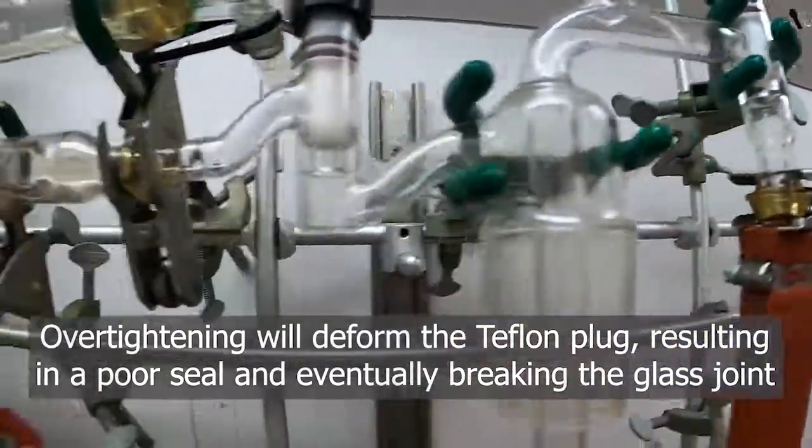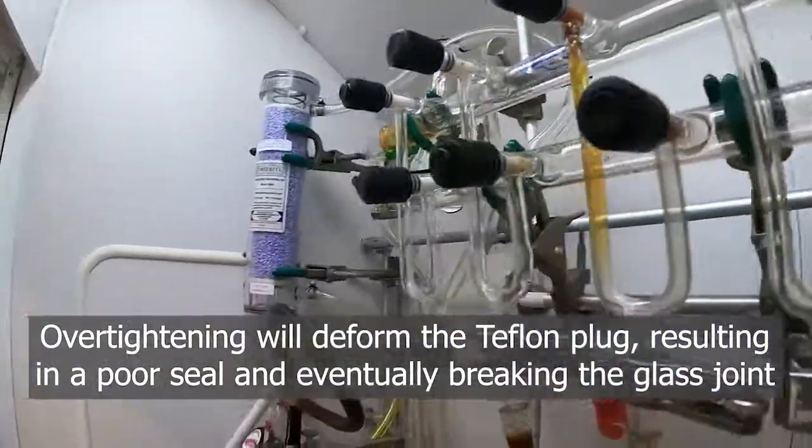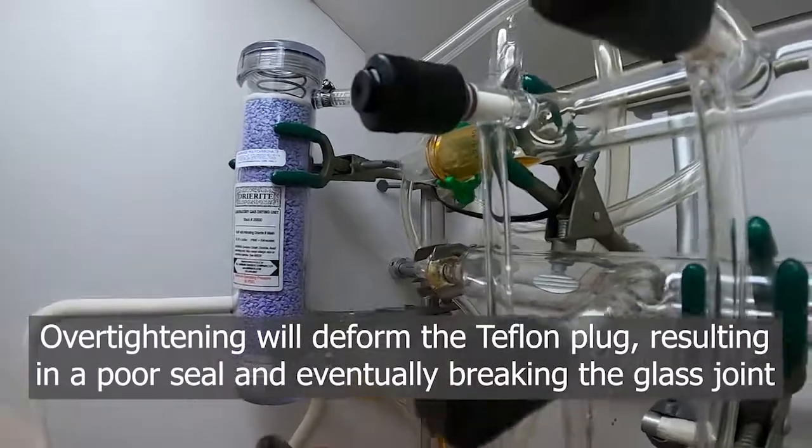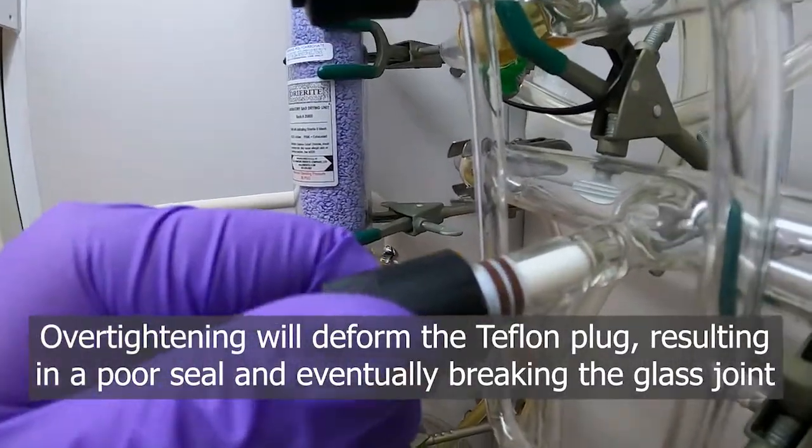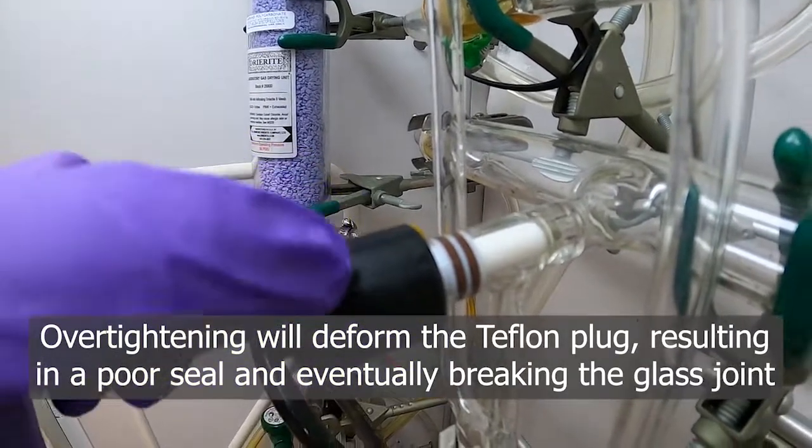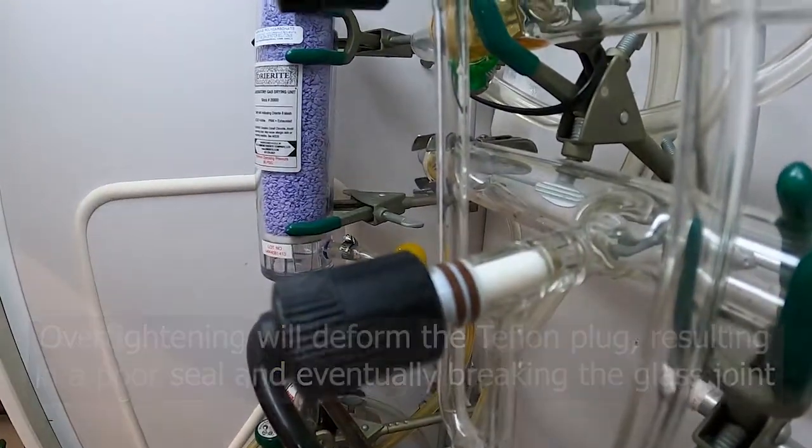And on the thinner ones, like for the Schlenk manifold itself, if you twist these too hard, you can actually break the glass, which you don't want to do.